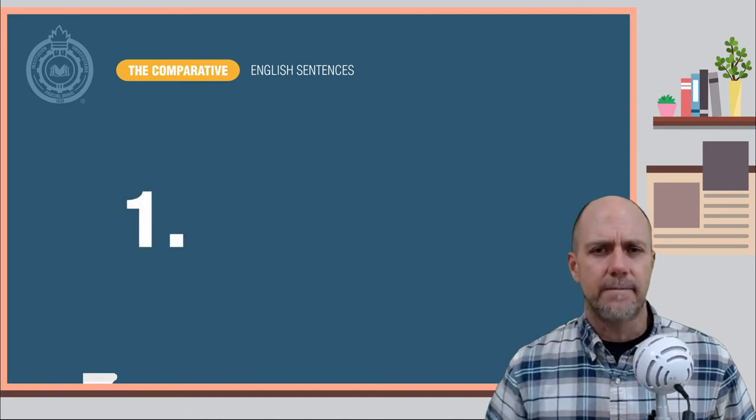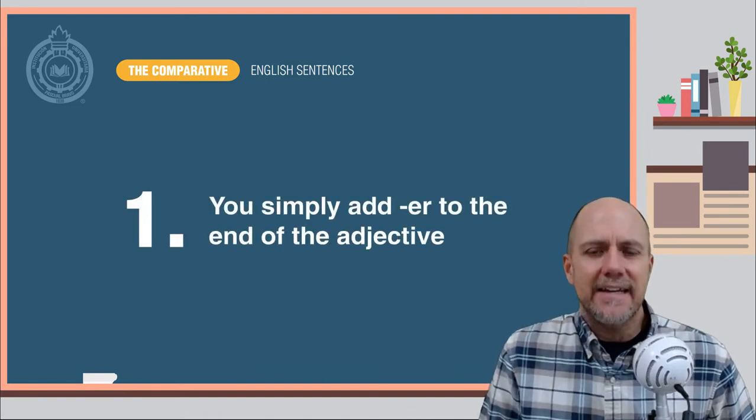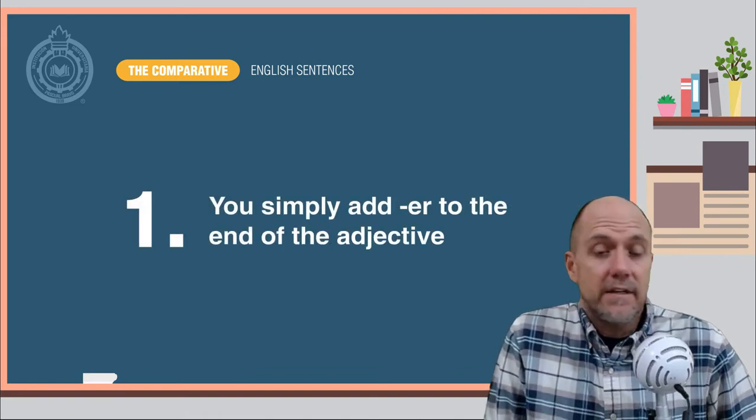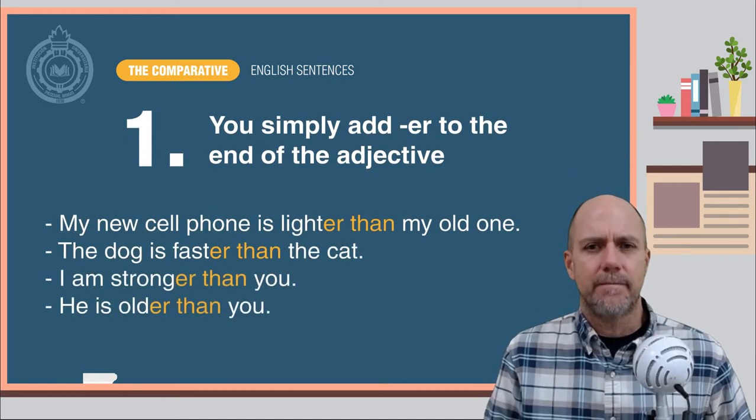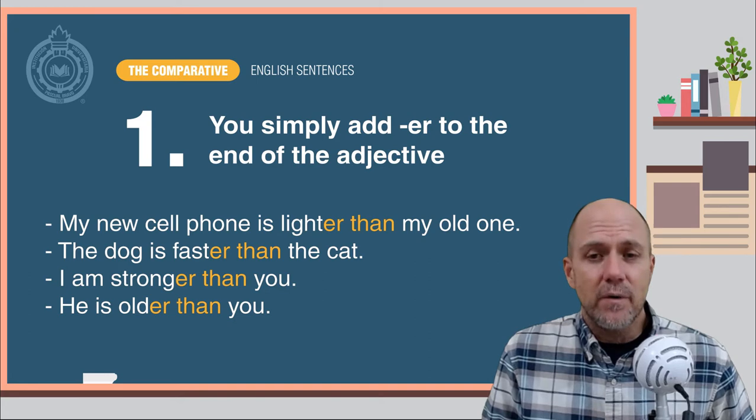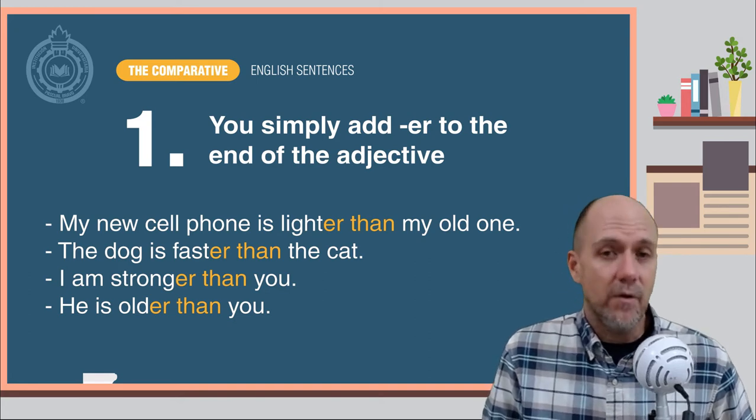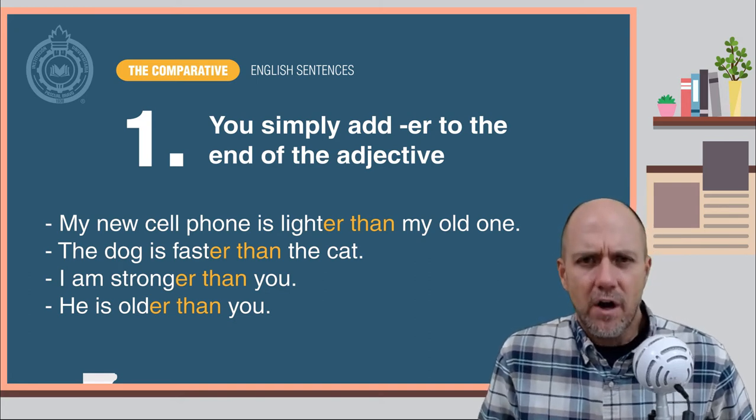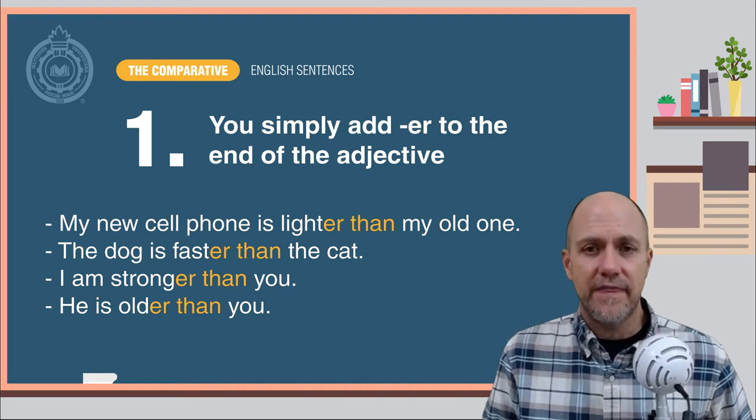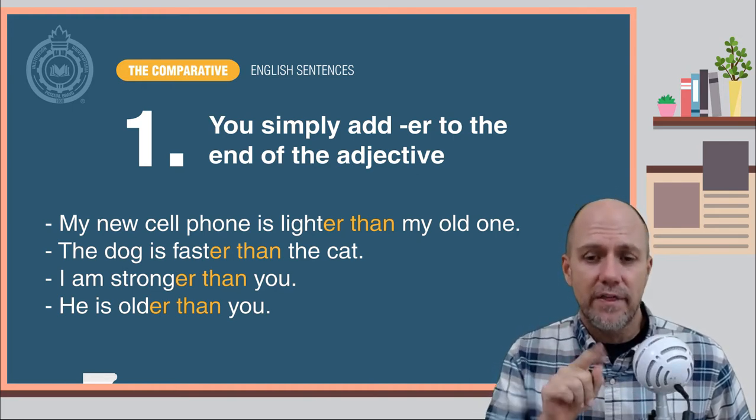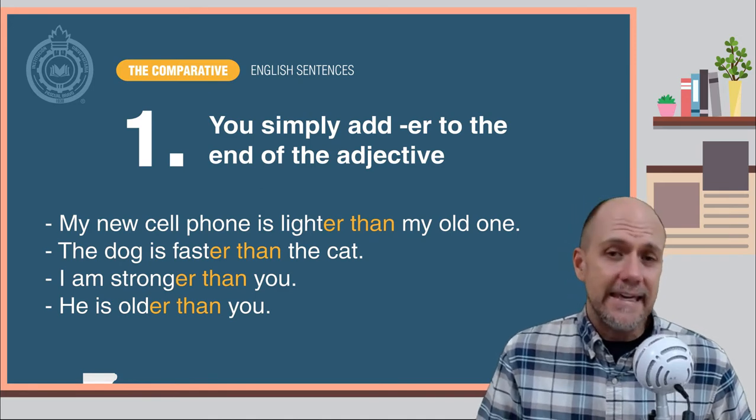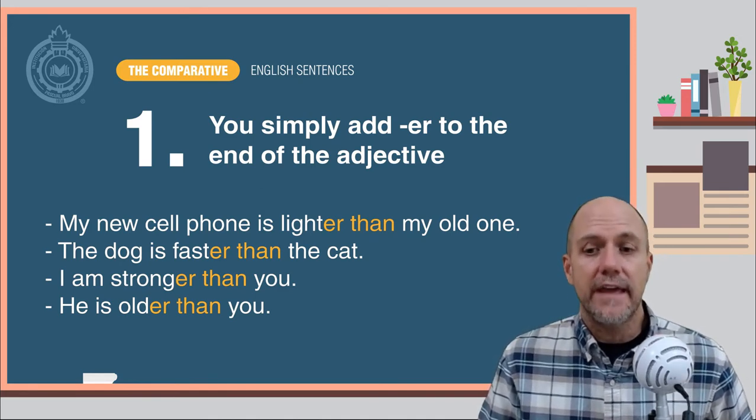The first way, you simply add -er to the end of the adjective. Here are some examples: My new cell phone is lighter than my old one. The dog is faster than the cat. I am stronger than you. He is older than you.